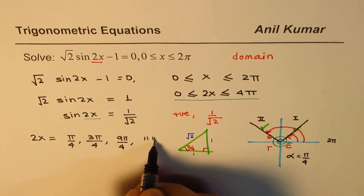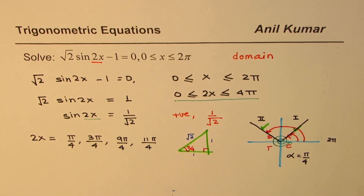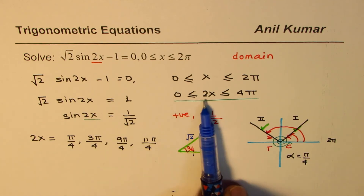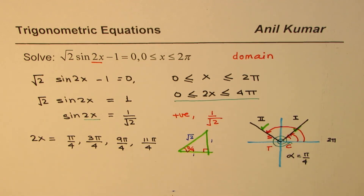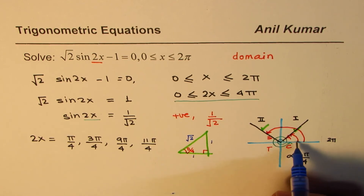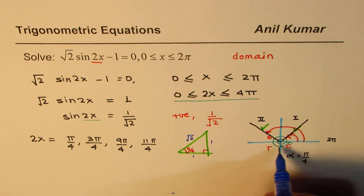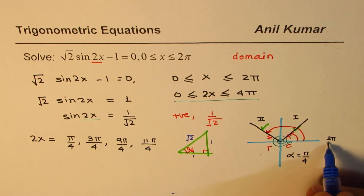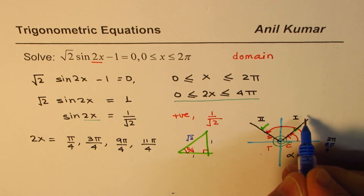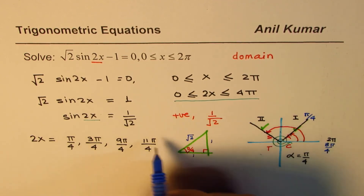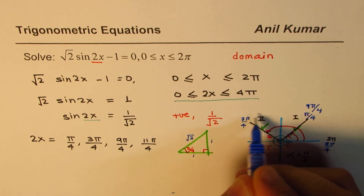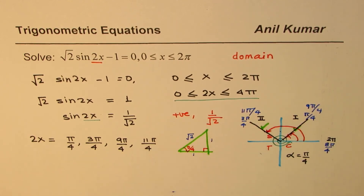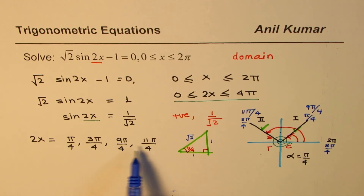Adding 8π/4 to 3π/4 gives 11π/4. So since the domain for 2x is 0 to 4π, we have four solutions: π/4 and 3π/4 from the first circle, and 9π/4 and 11π/4 from the second circle. If you do not consider this extended domain, you will miss out on these two additional solutions.